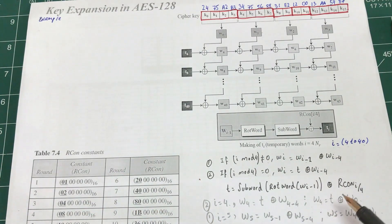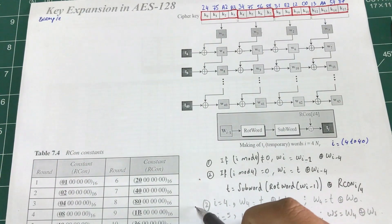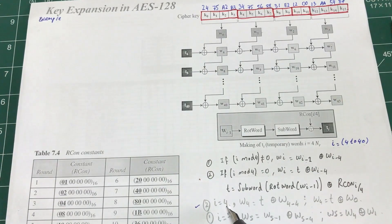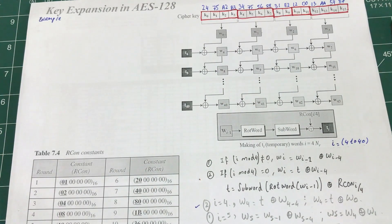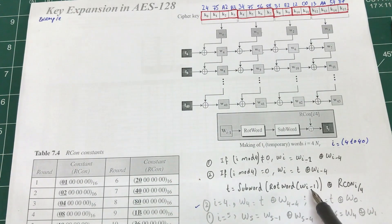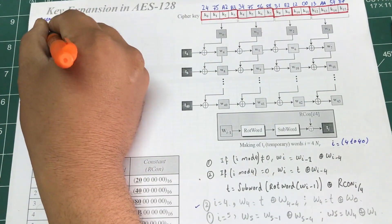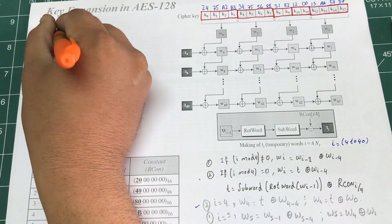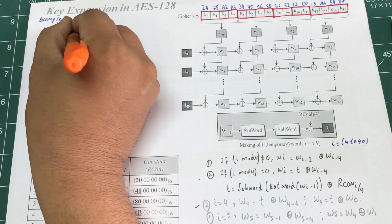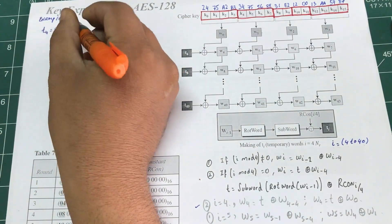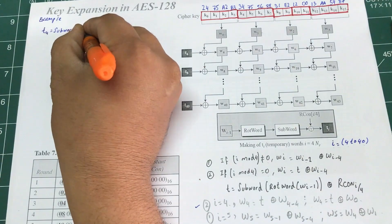So let's calculate T. Because I is equal to 4, I need to calculate T. The definition of T is SubWord of RotWord. So I'm calculating T4 here — SubWord(RotWord(...)).